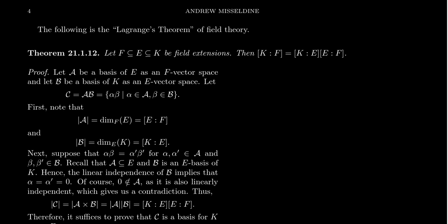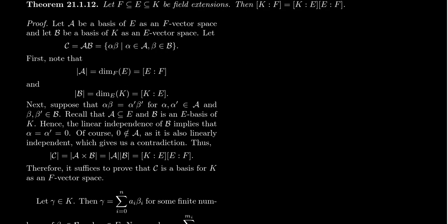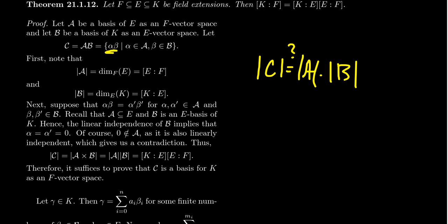Let's first make sure we know how many elements are in C. The cardinality of A, since it's a basis of E over F, is the dimension of E as an F-vector space — by definition that's the degree [E:F]. Likewise, the cardinality of B is the dimension of K as an E-vector space, which is the degree [K:E]. Is the cardinality of C equal to the cardinality of A times the cardinality of B? That's what we want to prove, but we have to show that each of these possible products α·β are distinct — because if any of them overlapped, we might not get the full count.